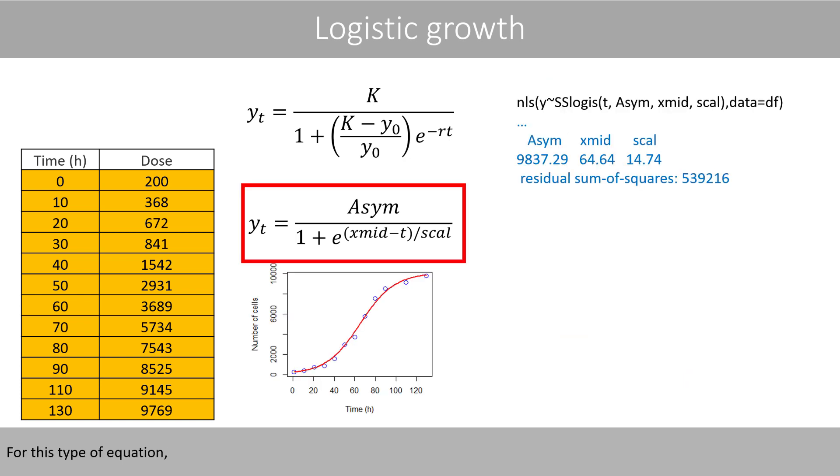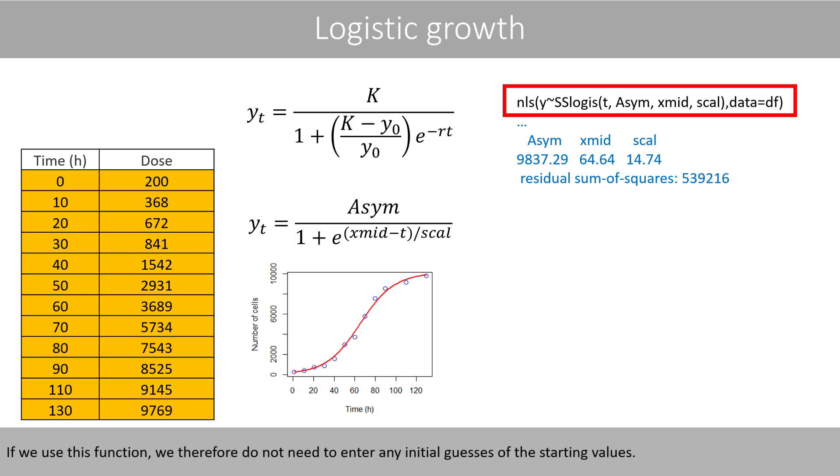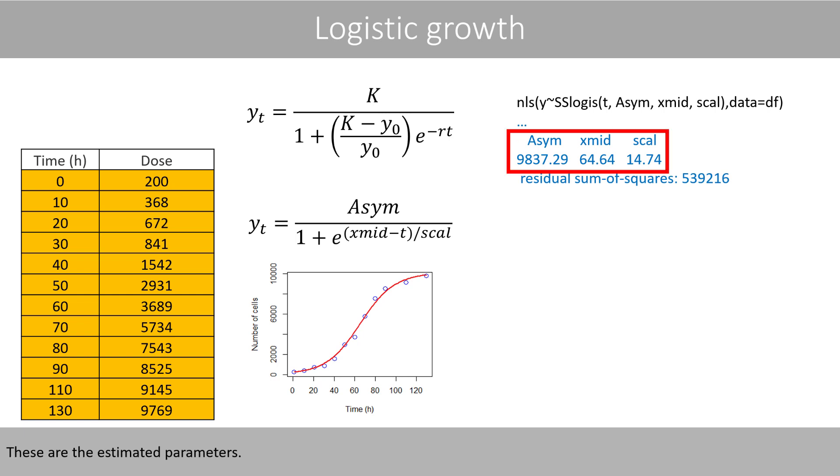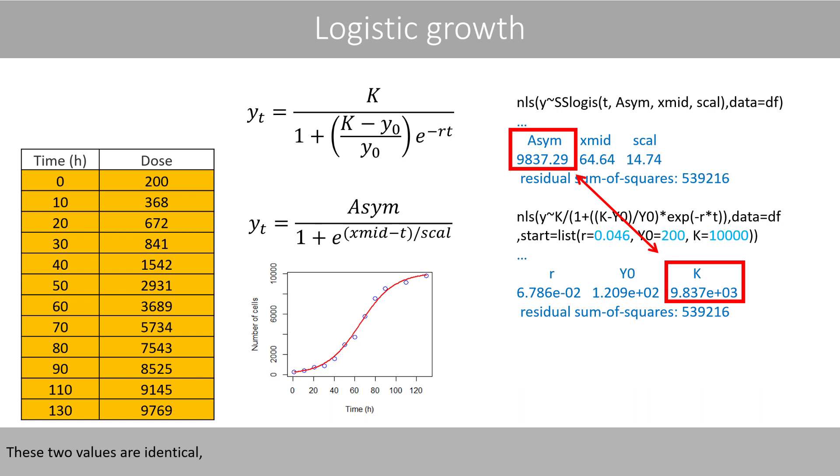For this type of equation, R has an inbuilt self-starting function that will calculate appropriate starting values by itself. If we use this function, we therefore do not need to enter any initial guesses of the starting values. These are the estimated parameters. We will get the same estimated parameters if we use this function. These two values are identical, and 1 divided by 14.74 is equal to 0.0678. If we plug in these values in the equation and set t to 0, y will be equal to the estimated value y0.